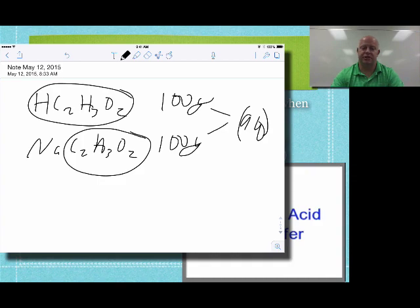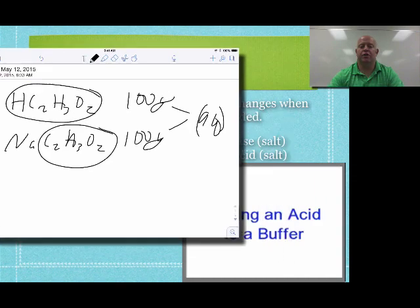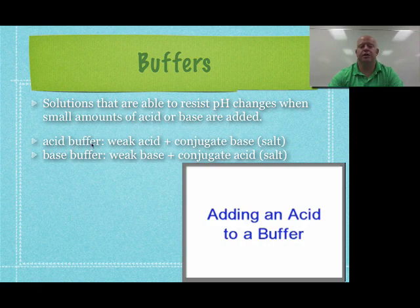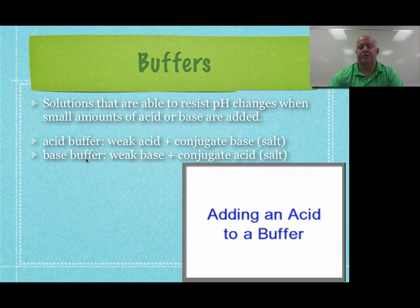If you want your buffer to be at a basic pH — above 7 — you do the exact same thing but use a weak base with its conjugate acid instead. So: weak acid with conjugate base for an acidic buffer, and weak base with conjugate acid for a buffer above pH 7.